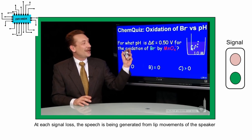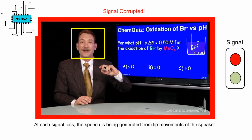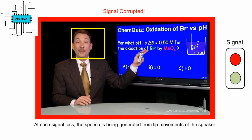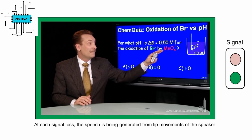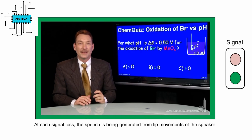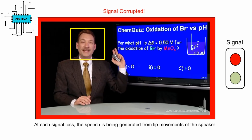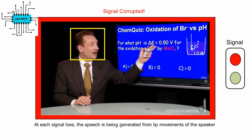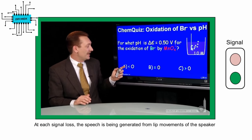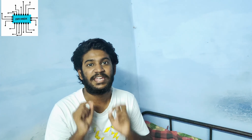Let's look at a cell potential of 0.5 volts for an oxidation of bromide by permanganate. The question is: what pH would cause this voltage? Would it be a pH that's less than zero?